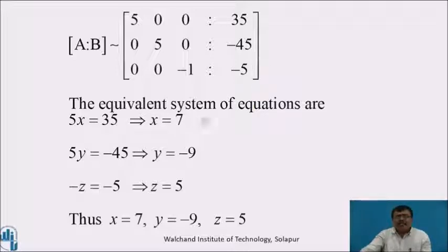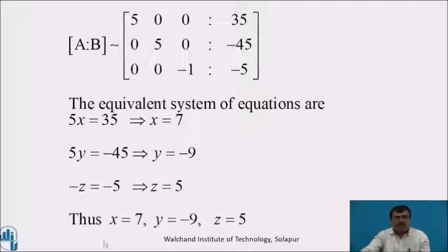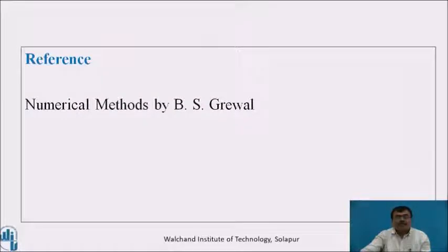The equivalent system of equations gives: 5x = 35, so x = 7; 5y = −45, so y = −9; −z = −5, so z = 5. Thus x = 7, y = −9, z = 5 is the required solution of the given system of equations. References: Numerical Methods by B.S. Grewal.